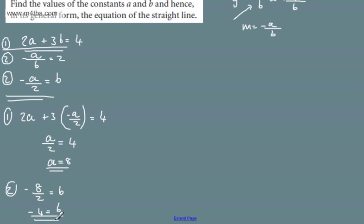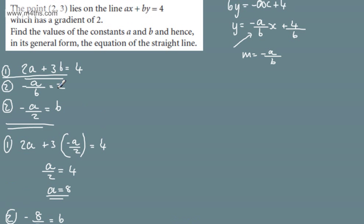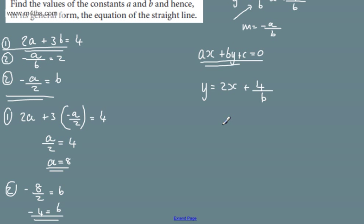I've simply substituted those in. We now need to write this equation in its general form. The general form is ax plus by plus c equals 0. If we consider now, we have an expression for the straight line equation. We already know that the gradient is 2. So, we can write this as y equals 2x plus 4 over b.